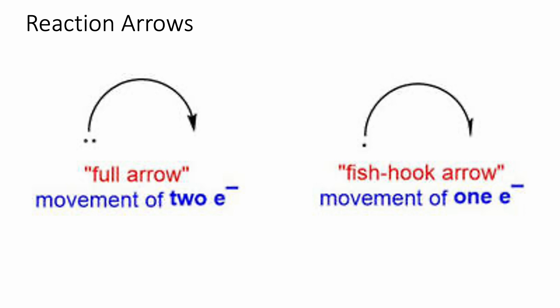When we're dealing with arrows in mechanisms where two electrons go the same direction — as in heterolytic bond cleavage — we use a full arrow, which has two heads at its tip. We contrast that with the fishhook arrow, which has only one head and looks like a fishhook. When two electrons are moving, we use the full arrow; when one electron is moving, we use the fishhook arrow.